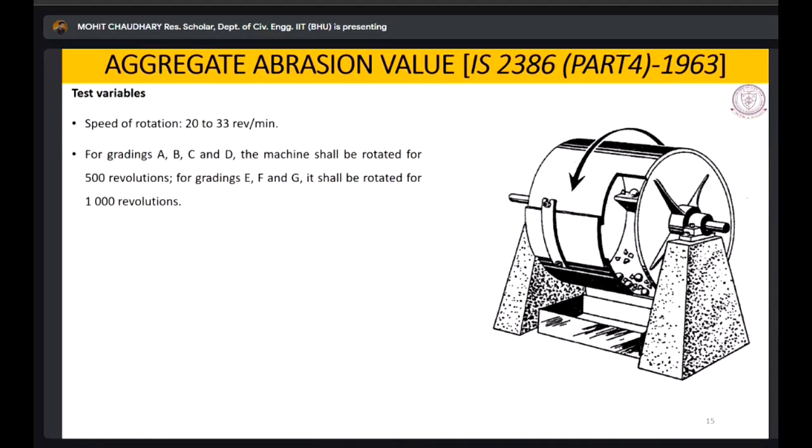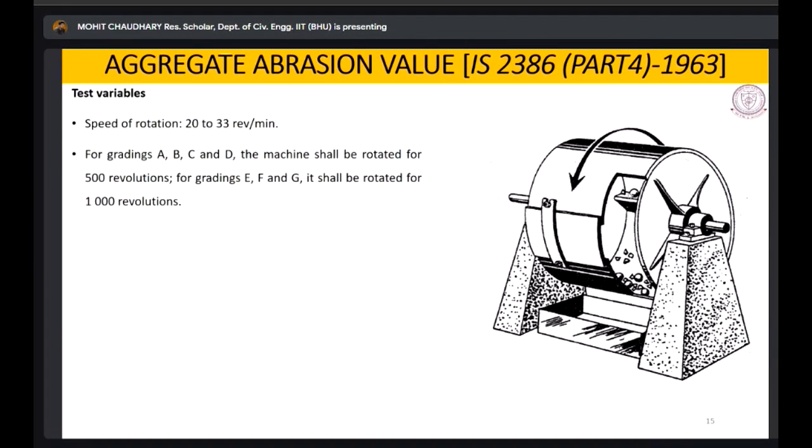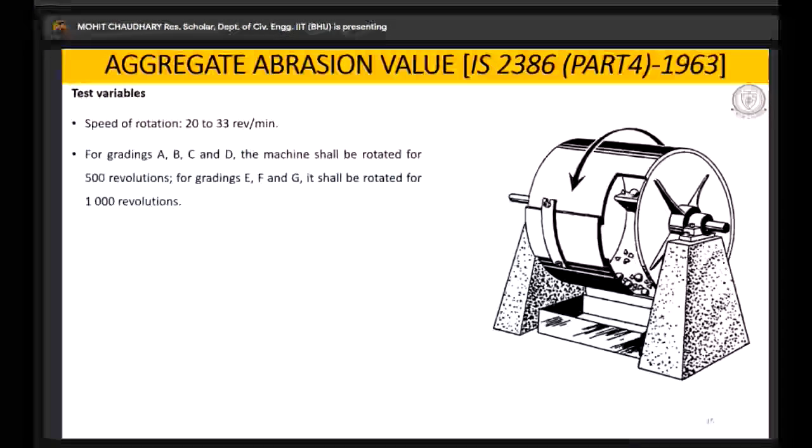After that, the machine will be stopped, the material is taken out and it is then sieved from the 1.7 mm sieve. Similar to the impact test, the material which gets passed through the 1.7 sieve is weighed and it is taken as the ratio of the initial material which we put inside the machine. That value is known as Los Angeles abrasion value.